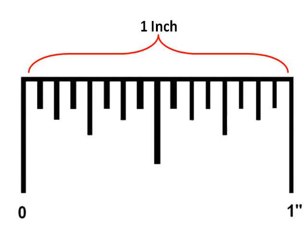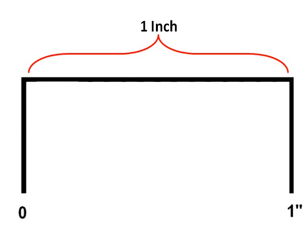Most tape measures have sixteen marks inside one inch. Let's see what they represent. First, the starting point is zero and the one inch mark is on the right.